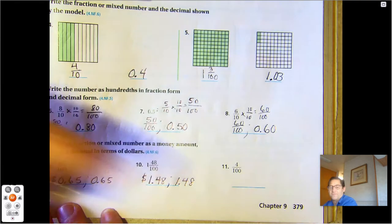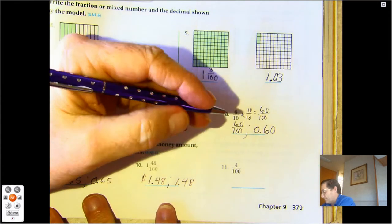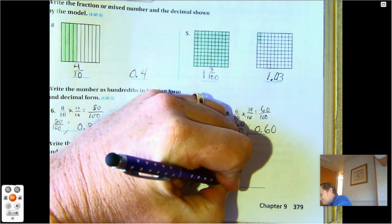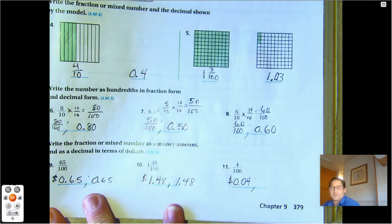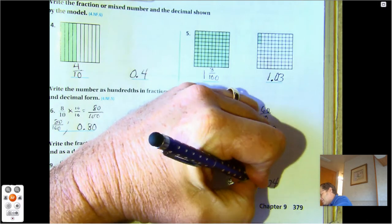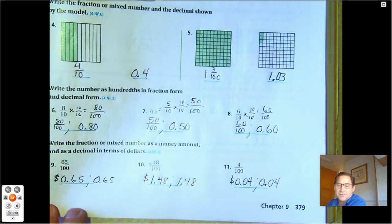Number eleven, four hundredths. So that's just four cents. Four hundredths as a decimal, same as the money amount, just without the dollar sign.